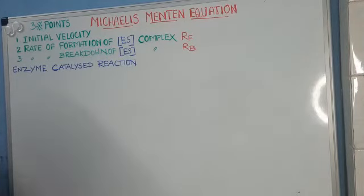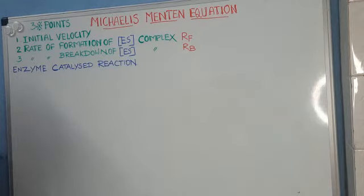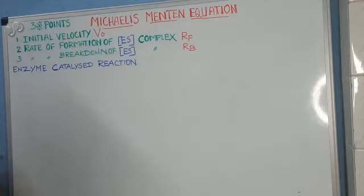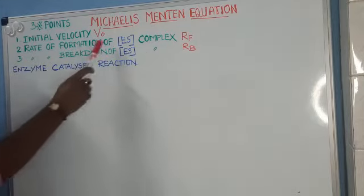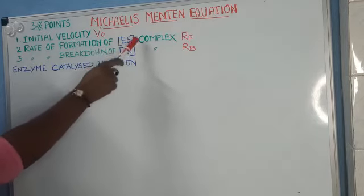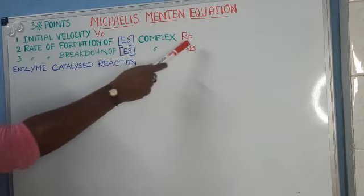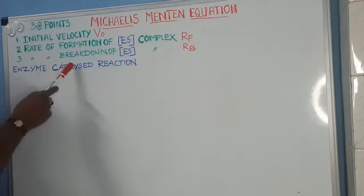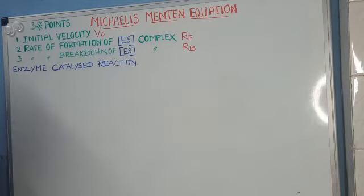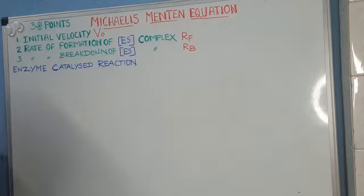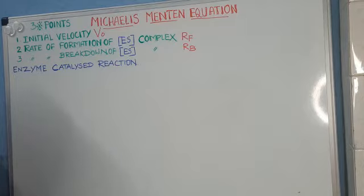In the Michaelis-Menten equation, you have to concentrate on three important points. The first point is initial velocity — the rate of the reaction mainly depends upon the initial velocity, represented as V0 in the derivation. Next is the rate of formation of ES complex, represented as RF. And next is the rate of breakdown of ES complex, represented as Rb. Formation can also be called association, and breakdown can also be called dissociation.